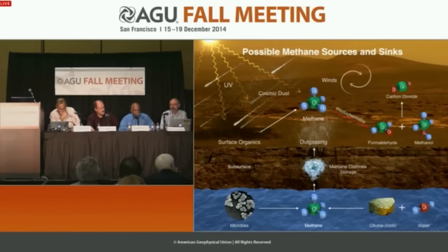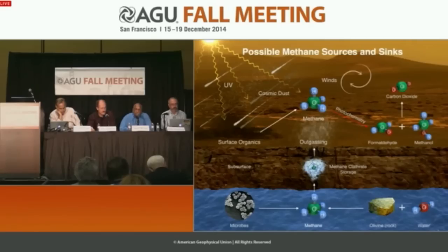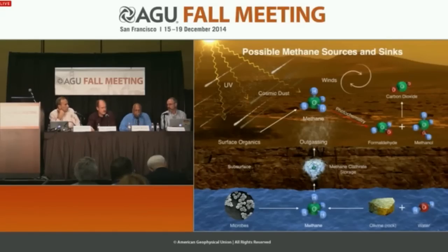The very low background level of methane that we are seeing could result just from the UV degradation of the surface organics. Biology and geology could add to it, but they're not really required. The sudden spike in methane over a two-month period represents a burp of methane from either a modern source or leakage of methane from clathrate storage.